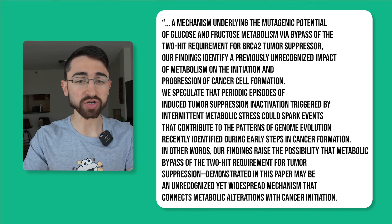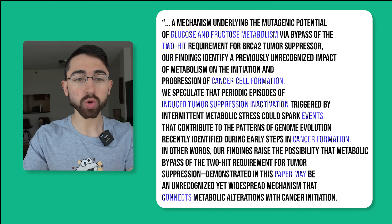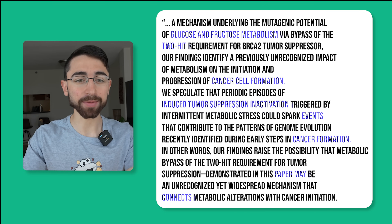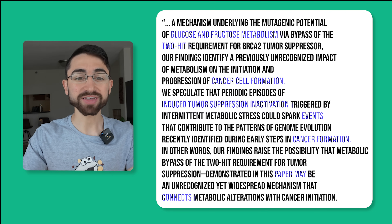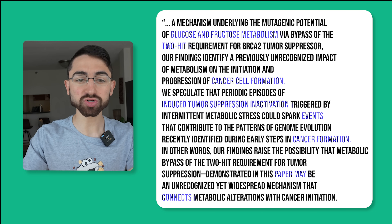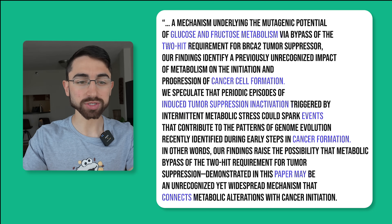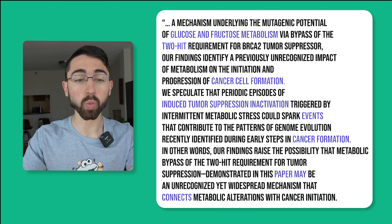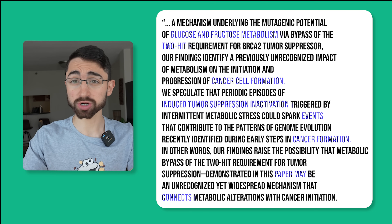To reinforce everything I just explained, I want to read two sections from the paper where the authors did a great job articulating the core message. I modified these slightly for clarity, indicated by a font color change. They write: "They discovered a mechanism underlying the mutagenic potential of glucose and fructose metabolism via bypass of the two-hit requirement for the BRCA2 tumor suppressor. Our findings identify a previously unrecognized impact of metabolism on the initiation and progression of cancer cell formation." They also write: "We speculate that periodic episodes of induced tumor suppression activation triggered by intermittent metabolic stress could spark events that contribute to the patterns of genome evolution recently identified during early steps in cancer formation." In other words, our findings raise the possibility that metabolic bypass of the two-hit requirement for tumor suppression may be an unrecognized yet widespread mechanism that connects metabolic alterations and sugar metabolism with cancer initiation.